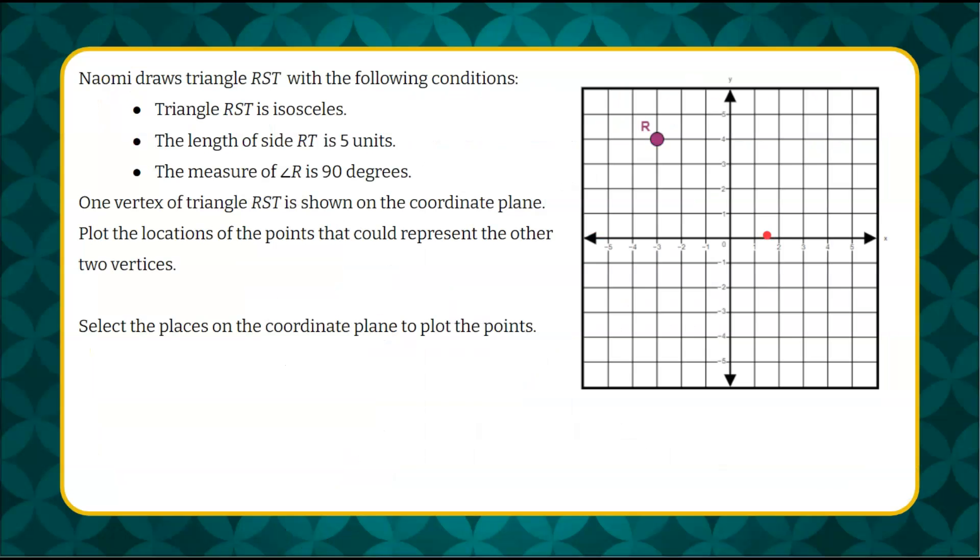Here's our question today. Naomi draws triangle RST with the following conditions: triangle RST is isosceles, the length of side RT is 5 units, the measure of angle R is 90 degrees, and one vertex of triangle RST is shown on the coordinate plane.